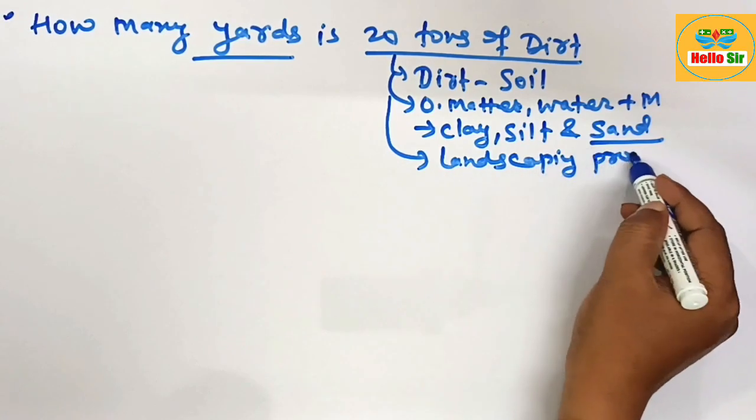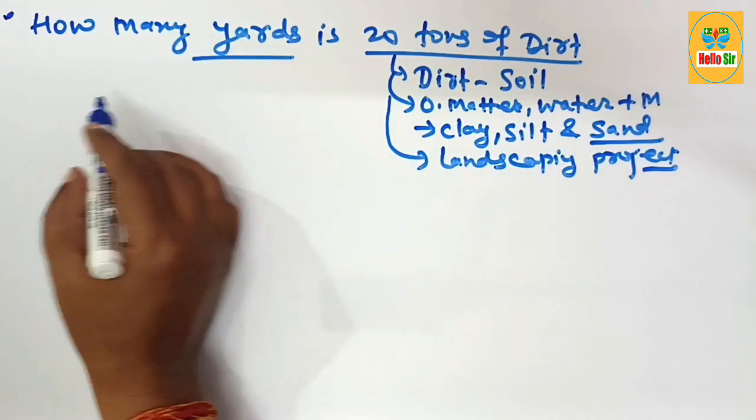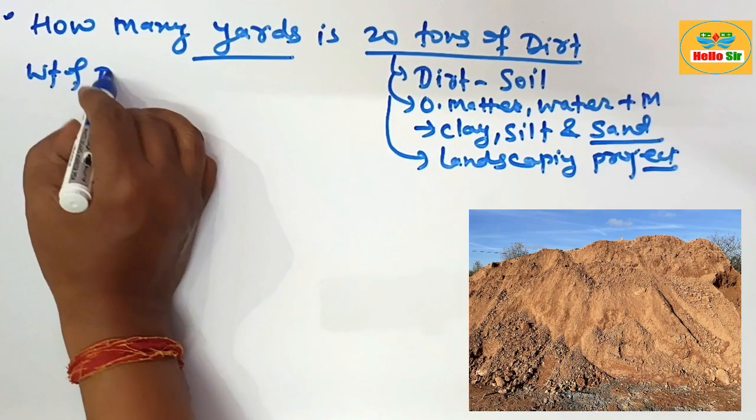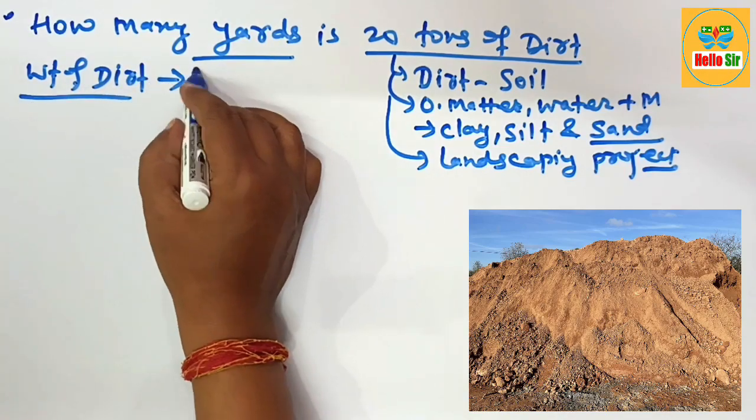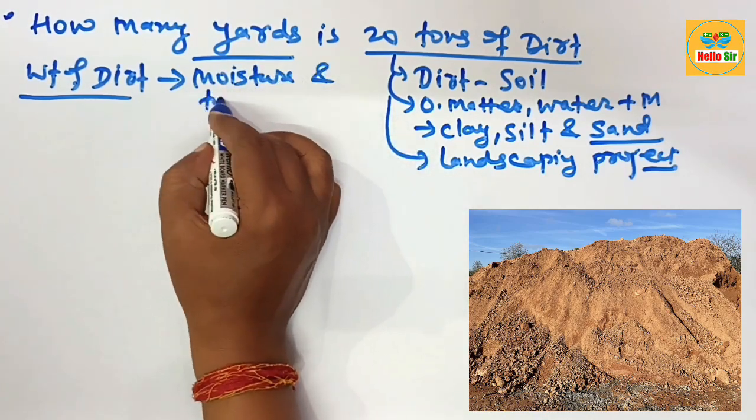You have to convert the tons of dirt into yards. The weight of dirt material depends on many factors like the moisture content of the soil and the type of soil.